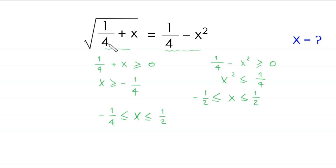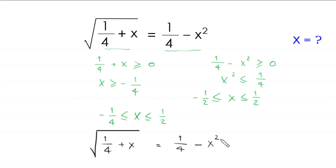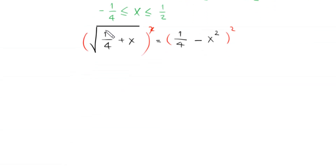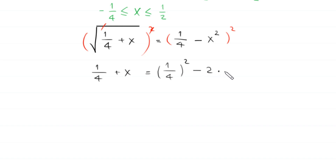Now let us continue by squaring both sides of this equation. Squaring both sides, the square root is cancelled on the left hand side, leaving 1/4 + x. The right hand side, (1/4 minus x squared) squared, expands to (1/4)² minus 2·(1/4)·x² plus x⁴.